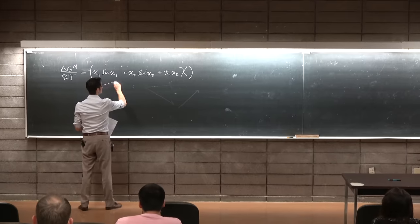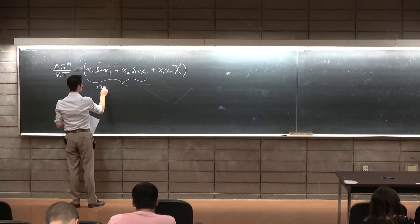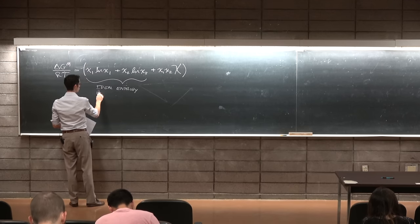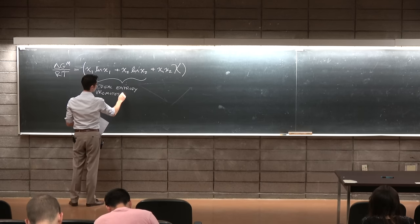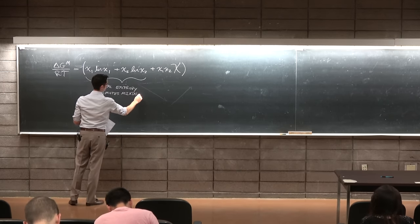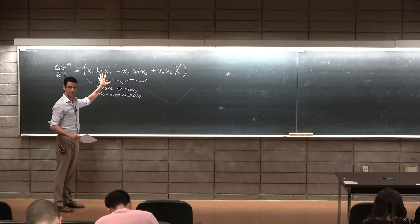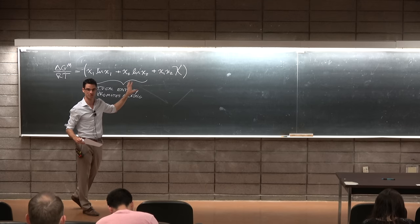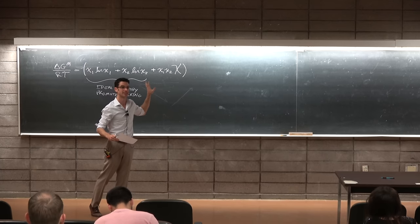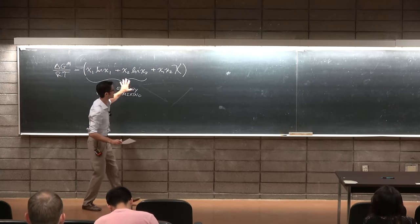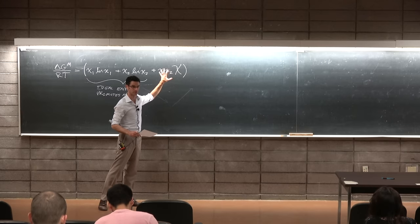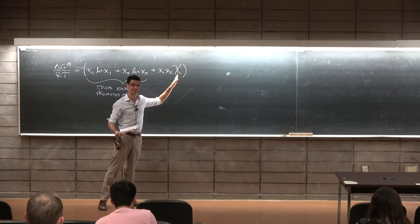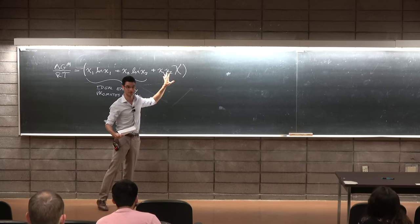This part — x₁ ln x₁ plus x₂ ln x₂ — is the ideal entropy, and it promotes mixing. Is it okay if I keep the discussion in terms of mole fractions for now? In about 20 minutes we'll switch to volume fractions when talking about polymers. But I want to develop the discussion in terms of ideal entropy plus the regular enthalpy, which means the intermolecular forces between 1-1, 2-2, and 1-2 can be different. In the ideal case they're the same, so there's no enthalpy term.